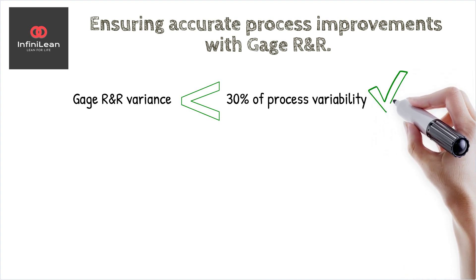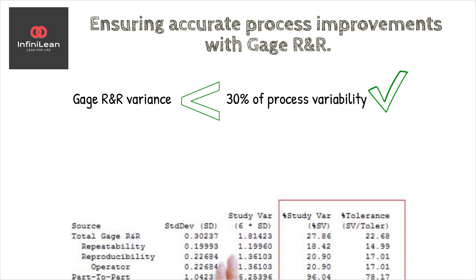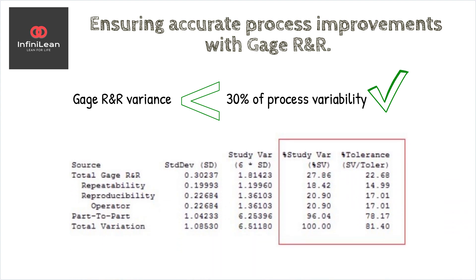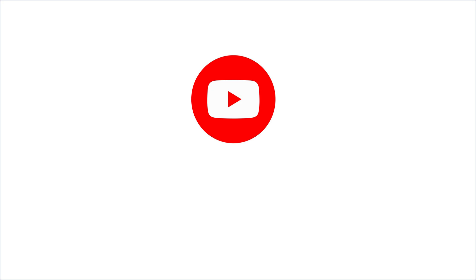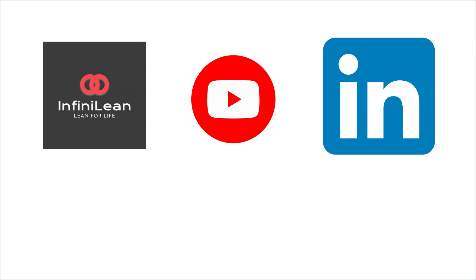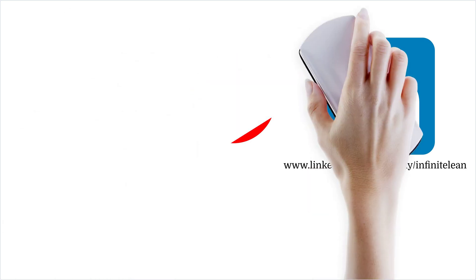Understanding Gauge R&R can significantly enhance the quality and reliability of your Six Sigma projects. Remember, measurement accuracy and consistency are non-negotiables in process improvement. That's all for today's video about Gauge R&R. Thank you for watching on behalf of Infinyline. Be sure to subscribe for more insights into Six Sigma and process excellence. See you on the flip side.